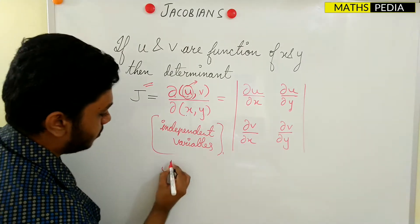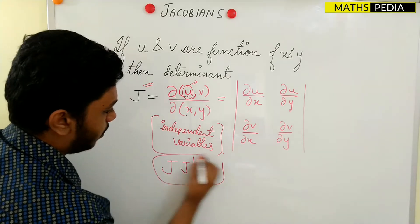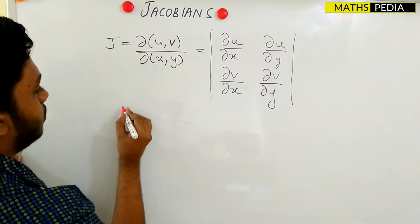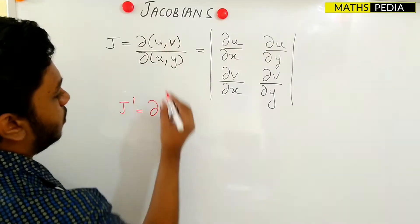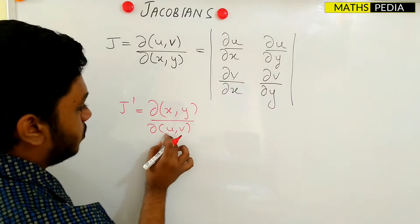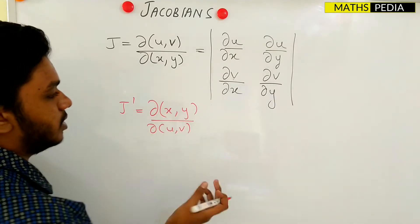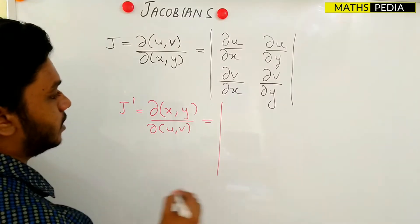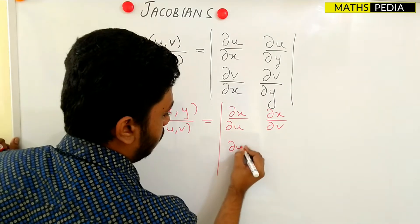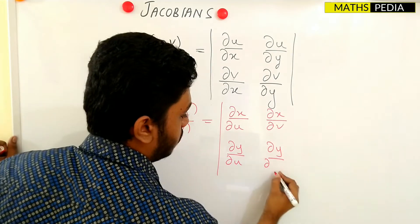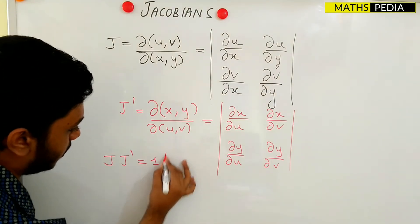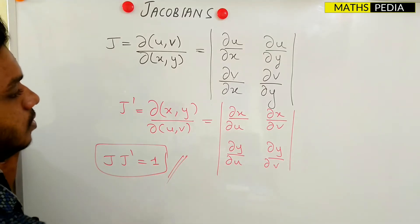One important property is that J·J' = 1. J' is ∂(x,y)/∂(u,v) — the reciprocal form — where now u and v become the independent variables and x and y become the dependent variables. The determinant for J' is: ∂x/∂u, ∂x/∂v in the first row, and ∂y/∂u, ∂y/∂v in the second row. Remember this property: J·J' = 1.